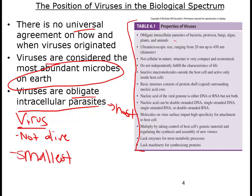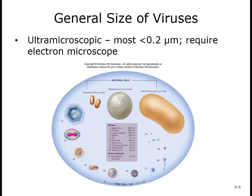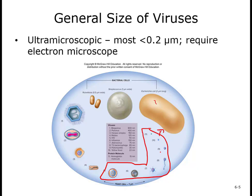Viruses are definitely the smallest type of microbe there is — they are incredibly tiny. As these images show, here's a bacterial cell, and you can see it's enormous compared to these tiny little viruses. You will never be able to see a virus under a regular microscope; you would need a transmission electron microscope in order to see a virus.